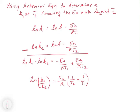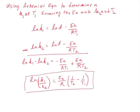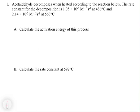You don't have to know how this is derived — you just have to know this equation. Here's an example: acetaldehyde decomposes when heated. The rate constant for decomposition is 1.05×10⁻³ M⁻¹/² s⁻¹ at 486°C, and 2.14×10⁻² M⁻¹/² s⁻¹ at 563°C.